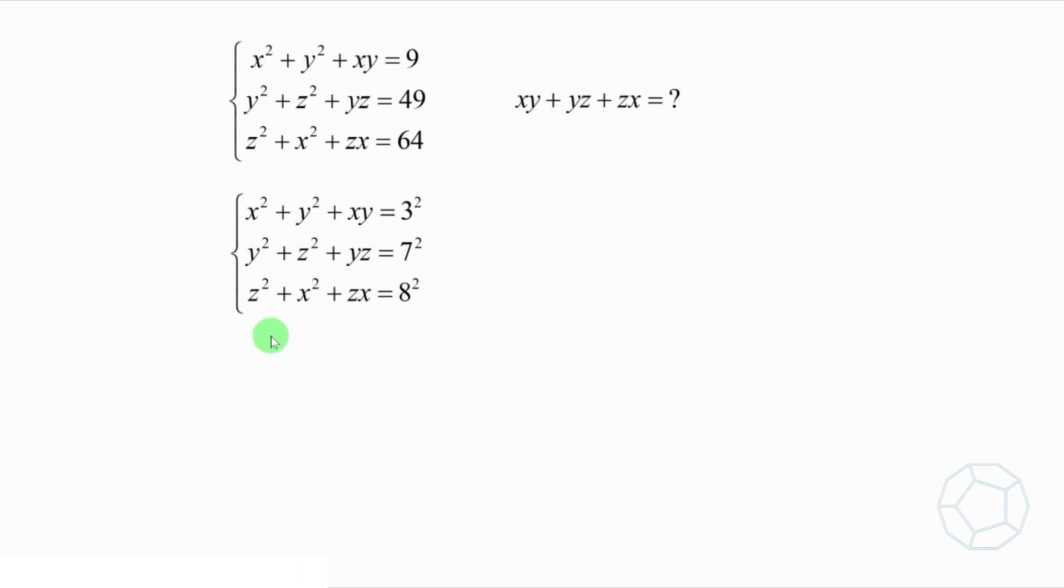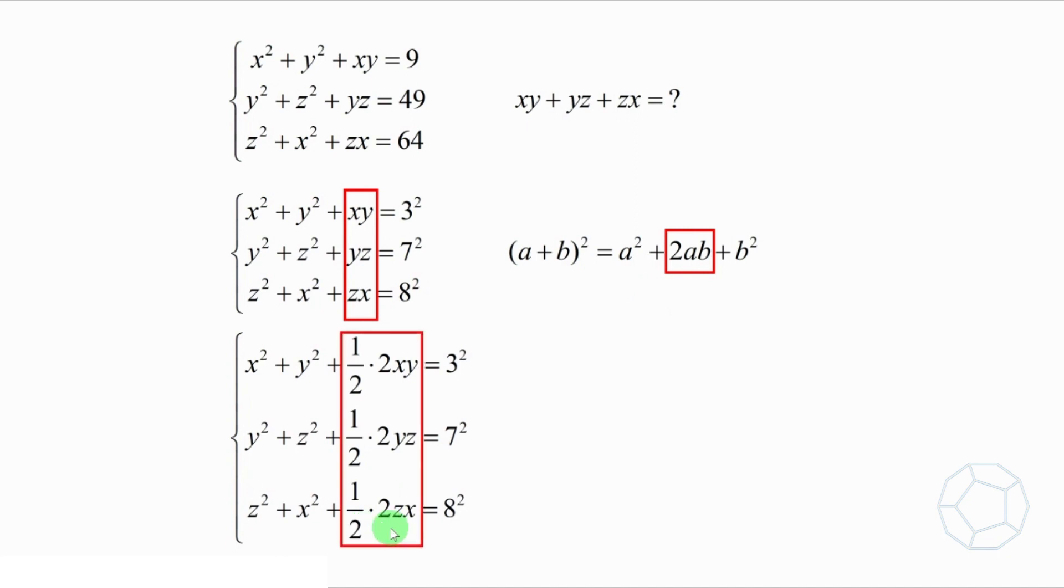Now let's focus on the left hand side. There are the square terms and the cross terms. Compare them with the perfect square identity, a plus b whole square is equal to a square plus 2ab plus b square. It's so unfortunate that we miss a factor of 2 in the cross terms. Anyway, let's change them to 2 times 1 over 2, so that's something like this.